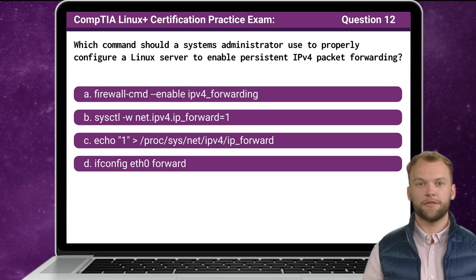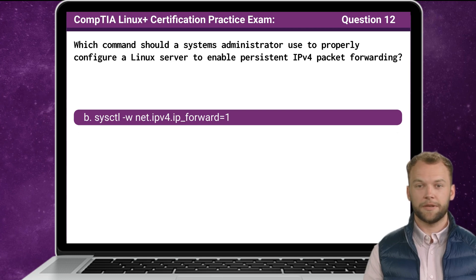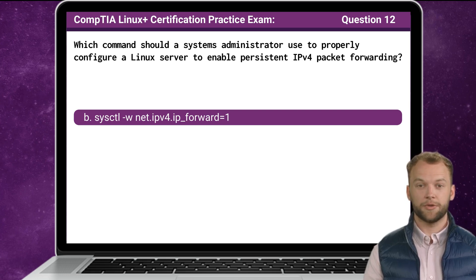Question 12. Which command should a systems administrator use to properly configure a Linux server to enable persistent IPv4 packet forwarding? The answer is B: sysctl -w net.ipv4.ip_forward=1.